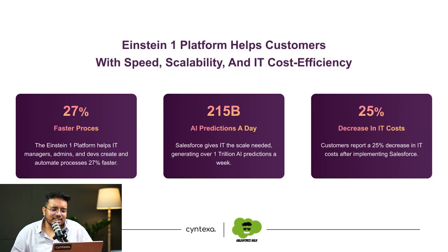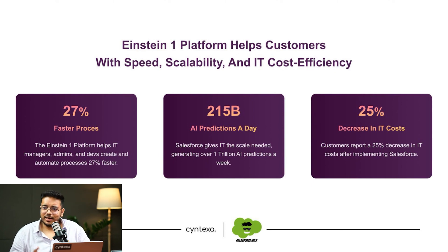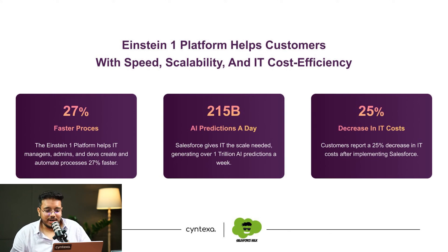Einstein One Platform helps customers with efficiency: 27% faster processes, 215 billion AI predictions a day, and a 25% decrease in IT cost. You can download the presentation and read through all the figures and numbers provided. A reference link will also be provided if you want to go through the original source.